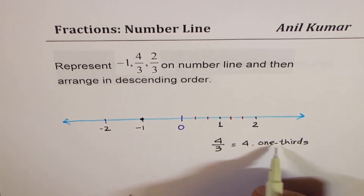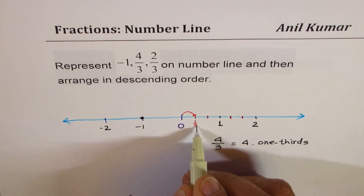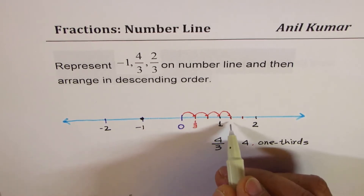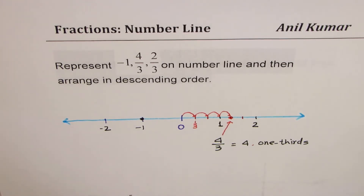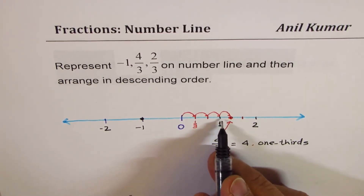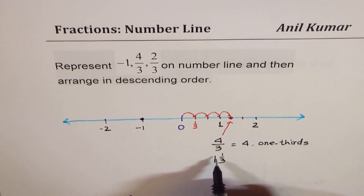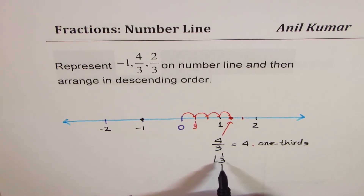When I say 4/3, that means we are looking for 4 one-thirds. This is 1 one-third, each is 1/3 — so 1, 2, 3, and 4. This point here represents 4/3. As you can see, it is also equal to 1 whole and 1/3. So 4/3 is the same as the mixed number 1 and 1/3.